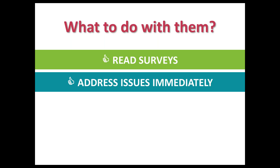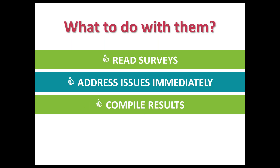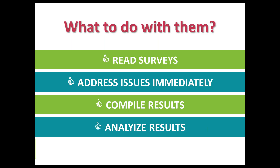Everyone has patients who will probably never be completely satisfied no matter what you do for them, but at least reach out and make sure you give an effort. If you're not able to satisfy them, at least let them know that you've listened and that you understand their issue. Now, if the survey is anonymous, reaching out really isn't an option — even if you think you know who they are, respect their anonymity. But if an anonymous person tells you about an issue, please take it just as seriously. Once you've read the surveys and taken action on problems, you need to compile, analyze, and then create an action plan.